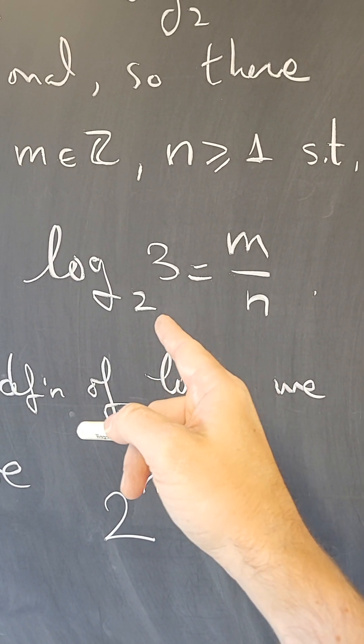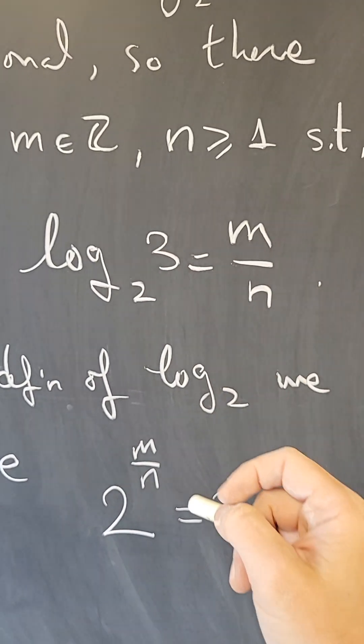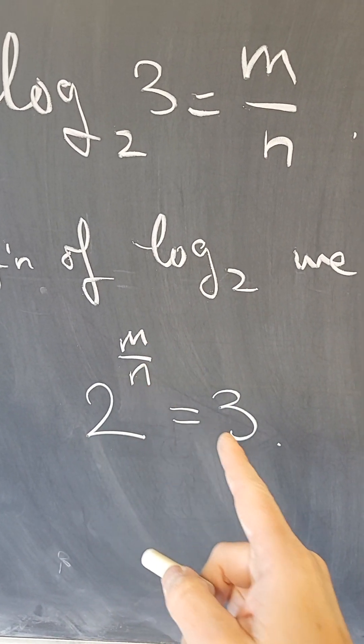this means that the power you need to raise 2 to get 3 is m/n, so 2^(m/n) = 3.